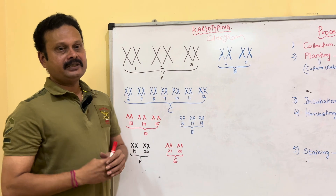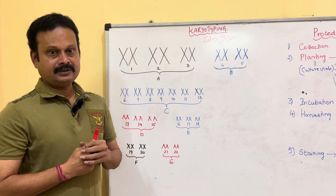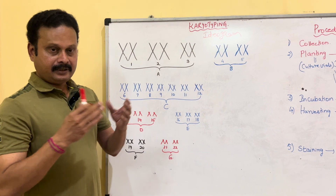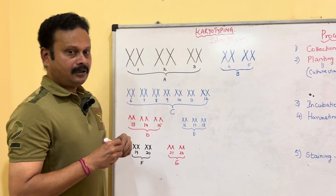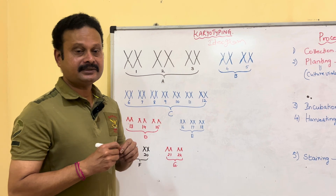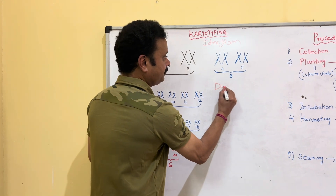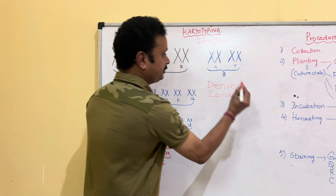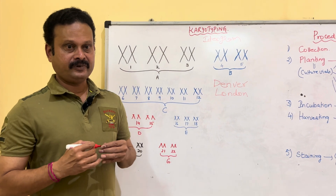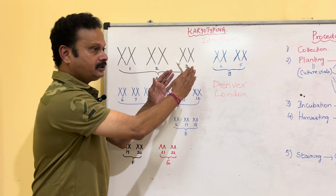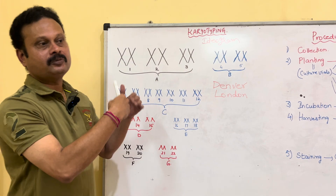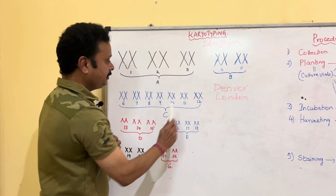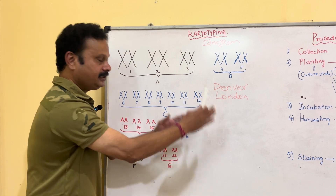Nowadays, karyotyping is done on electronic devices, but in older days it was manually done in the laboratory. After doing that, according to the Denver-London System of Classification in 1960, the chromosomes — including both the autosomes and sex chromosomes — are arranged in the form of seven groups: A, B, C, D, E, F, G, and the sex chromosomes.